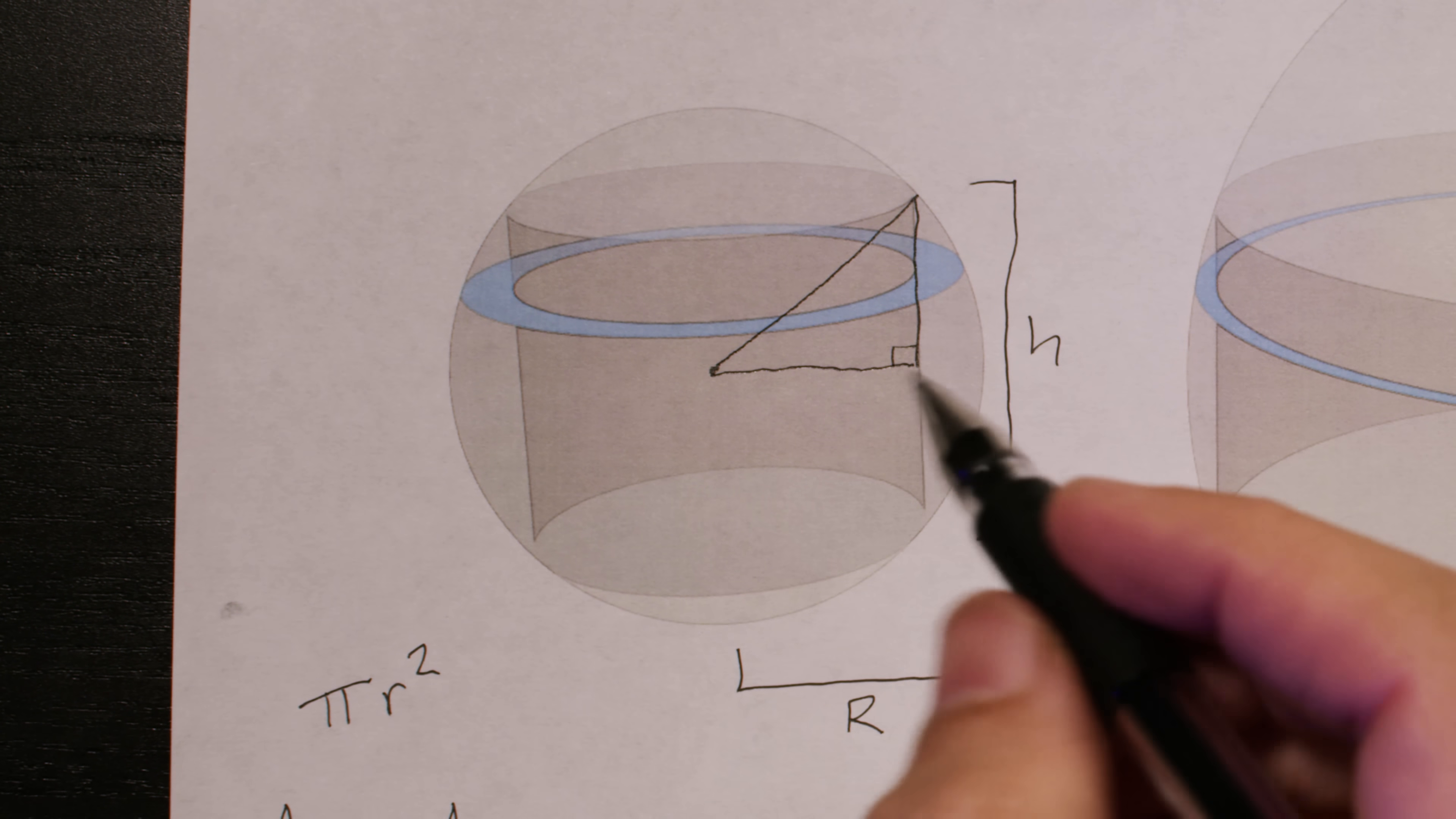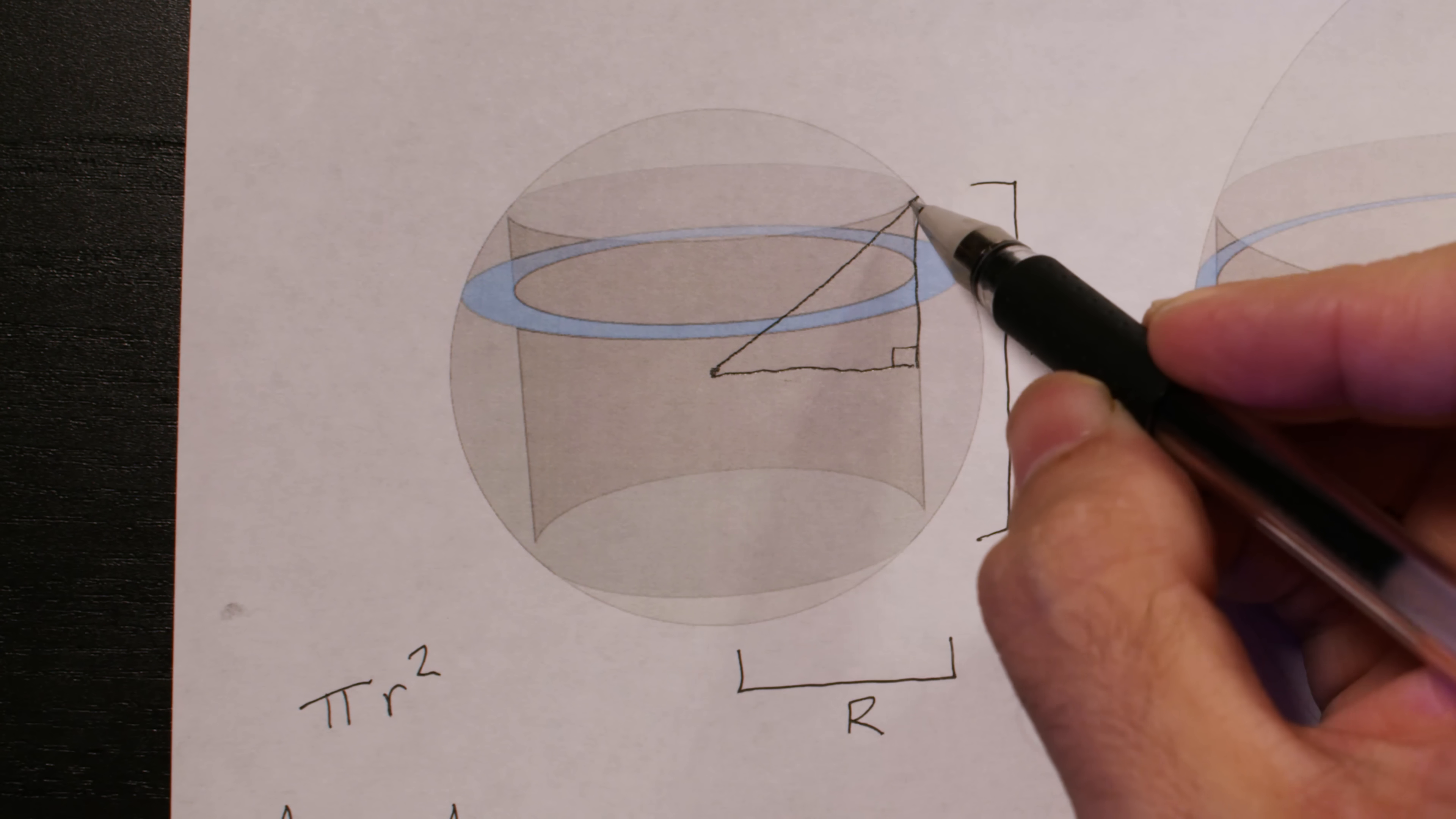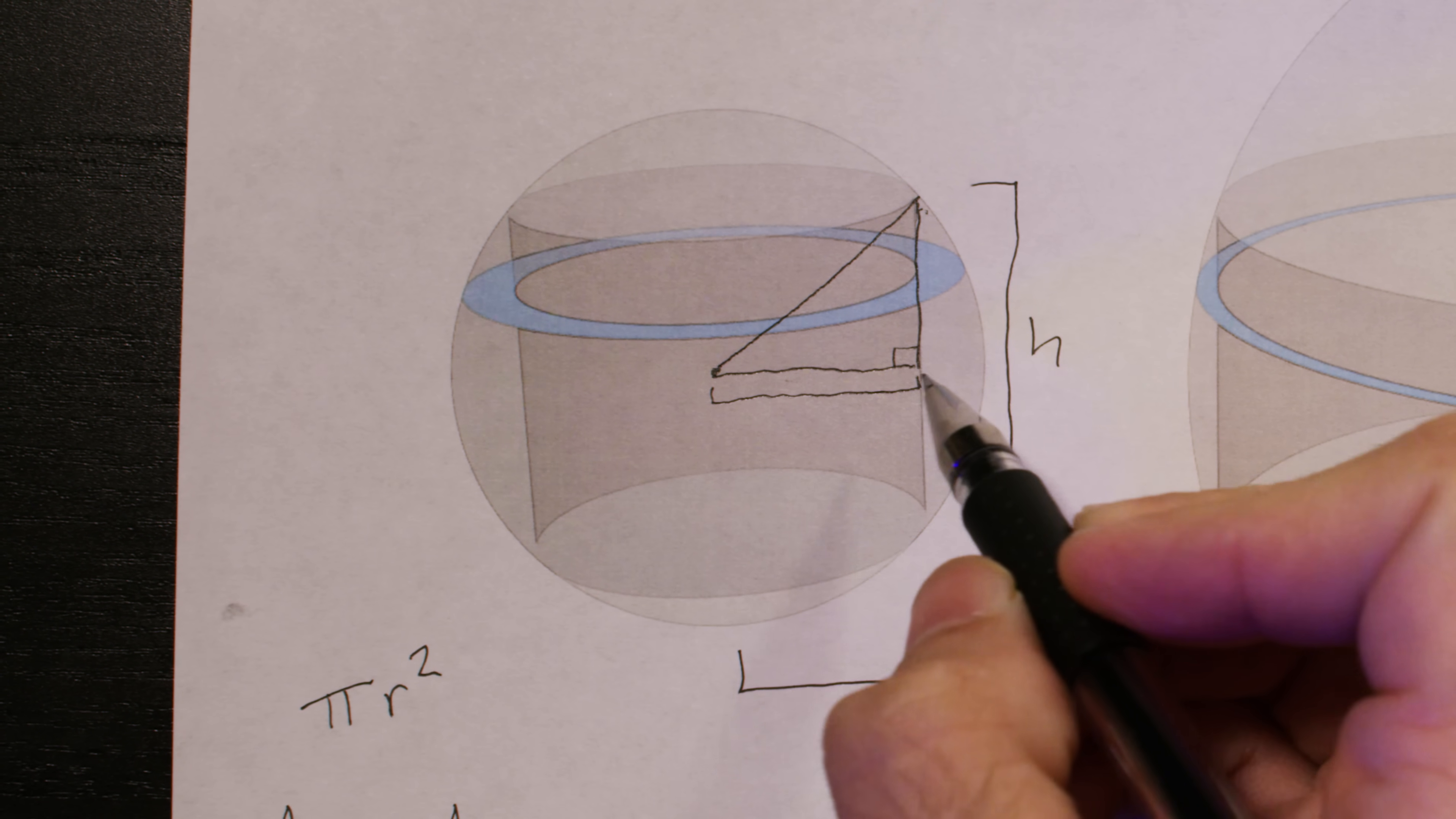The Pythagorean theorem will really help us here. It tells us that the length of one side squared plus the length of the other side squared equals the length of the hypotenuse squared. Now, this distance right here, this side of the triangle, is what we want. It's the radius of the cylinder.